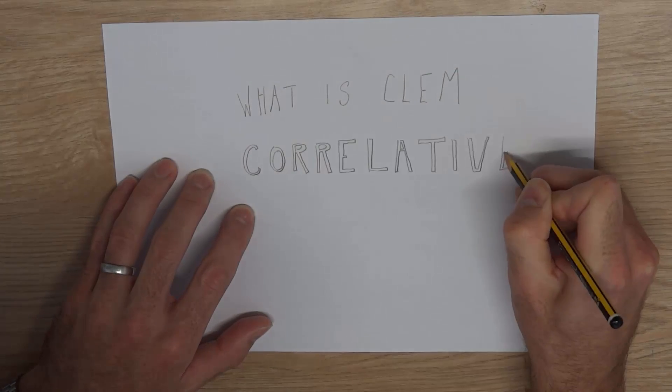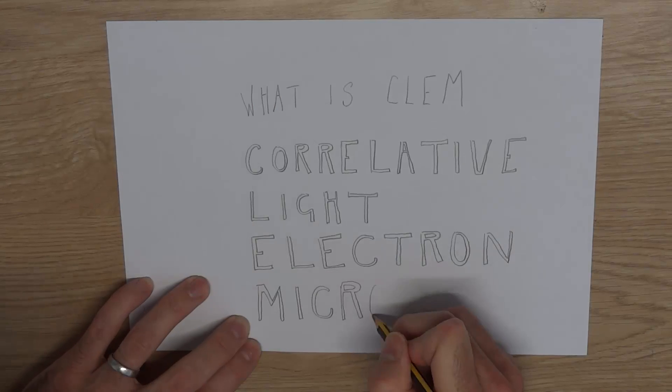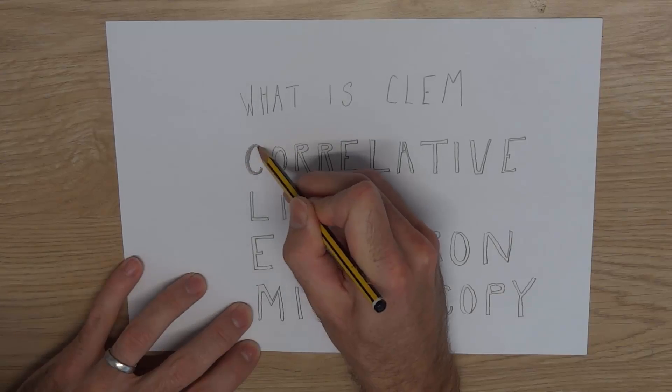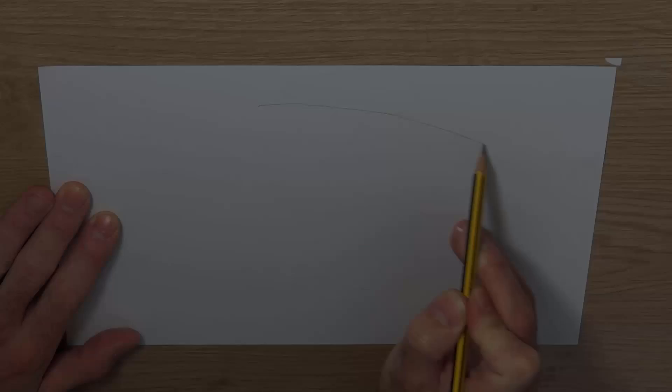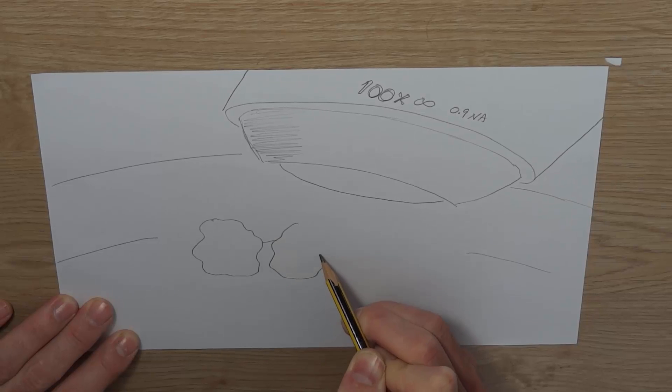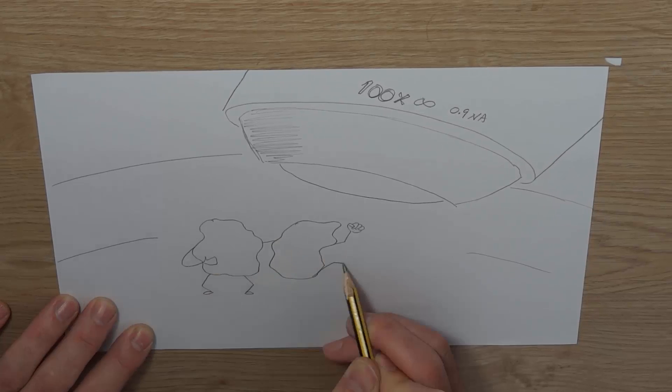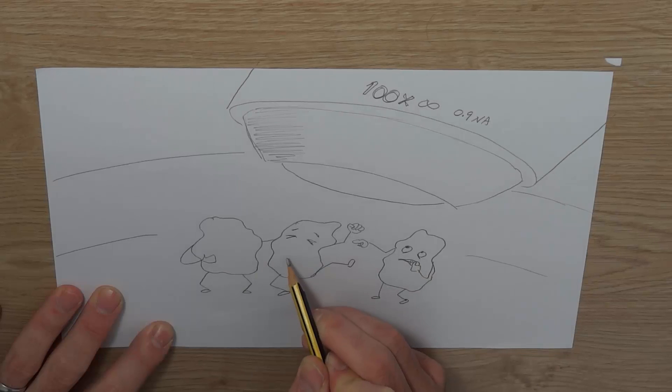So what is CLEM? Correlative Light Electron Microscopy. Life is built from biological cells, each one a tiny factory loaded with the most incredible machinery optimized to carry out a very specific task.